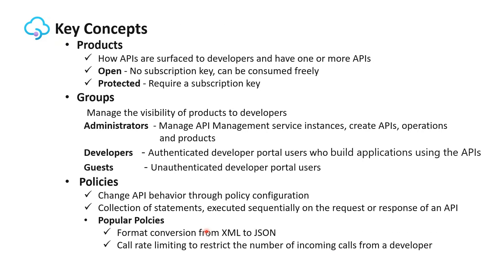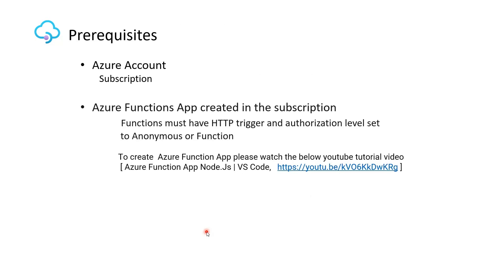Policies can change API behavior through configuration. A policy is a collection of statements executed sequentially on the request or response of an API. Some popular policies include format conversion from XML to JSON and call rate limiting to restrict the number of incoming calls from a developer.